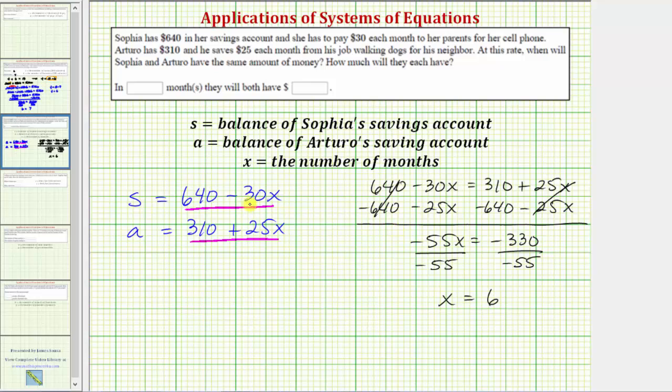Substituting 6 for x in the first equation we have S equals 640 minus 30 times 6 which is equal to 640 minus 180 which equals 460.